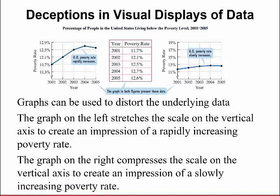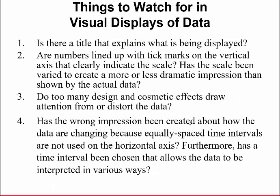Let's talk about deceptions in visual displays of data. Graphs can be used to distort the underlying data that you have. So the graphs on the left and on the right here show the year and the poverty rate in the country. The graph on the left stretches the scale on the vertical axis. It starts at 11.3 and goes to 12.9 to create the impression of a rapidly increasing poverty rate. The graph on the right compresses it. It goes from 11 to 19 here on the scale on the vertical axis to create the impression of a slowly growing poverty rate. The reality is that it's probably somewhere in between.